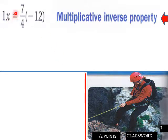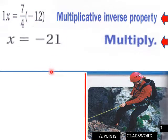So once we do that, we have x equals 7/4 times negative 12, and that is negative 21. So x equals negative 21.